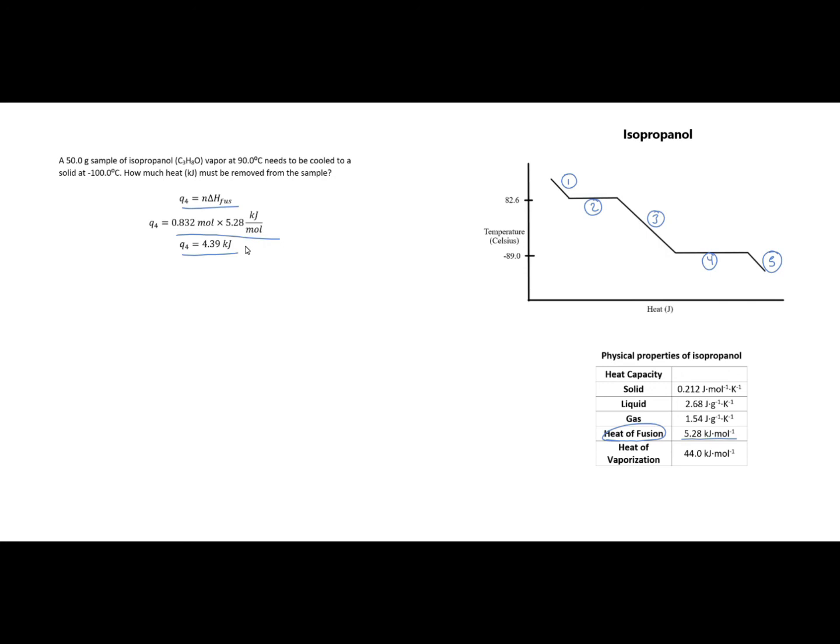Finally my last region, Q5. Now I have a solid at negative 89 degrees Celsius but my problem wanted me to cool it all the way down to negative 100 degrees Celsius. So I'm going to take my solid and cool it from negative 89 degrees Celsius down to negative 100 degrees Celsius. This does involve a temperature change so my Q5 is MC delta T. I go to my table to find my heat capacity for my solid right here.